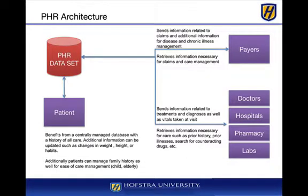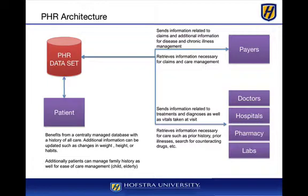So what does the architecture look like? We'll have a PHR system. With payers, we might send information related to claims and additional information for disease and chronic illnesses. We may also wish to retrieve information necessary for claims and care management — again, if we allow that. We do not have to allow that. But payers would love to see that information because they want to ensure they're paying for proper procedures.